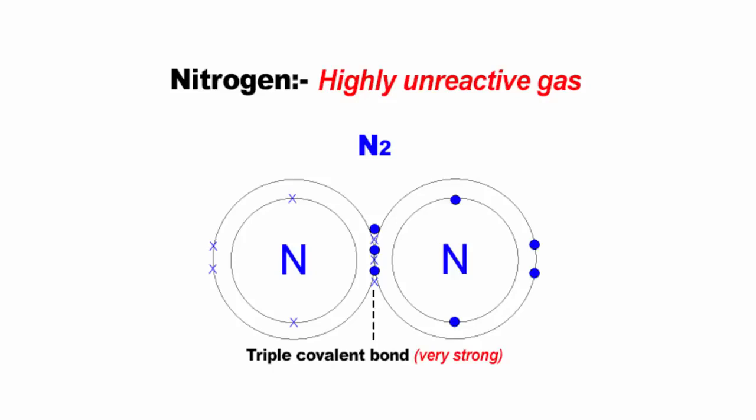Now the big question is, where are you going to find that kind of energy? Once the strong triple bond is broken, nitrogen atoms are very reactive. So the whole meaning of the nitrogen cycle is to break the nitrogen molecules so that it can be utilized by plants and animals.